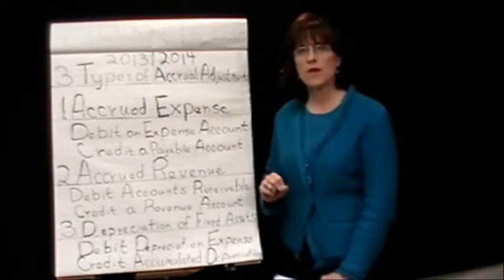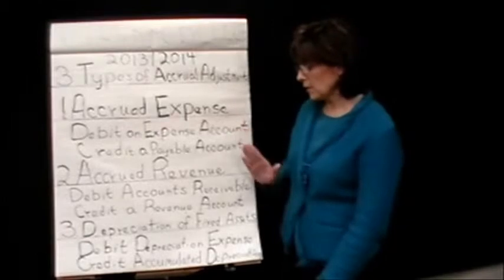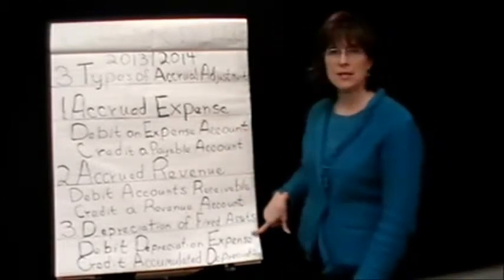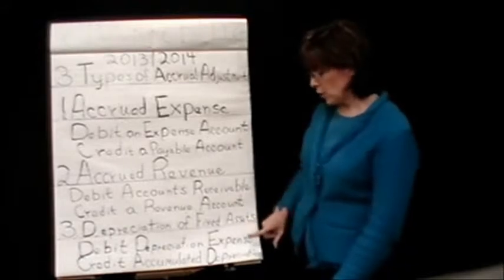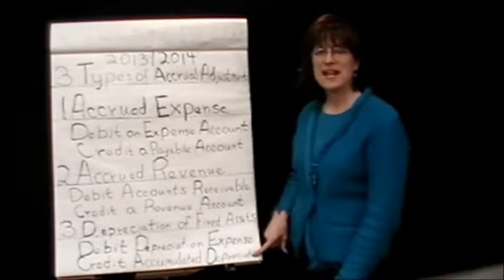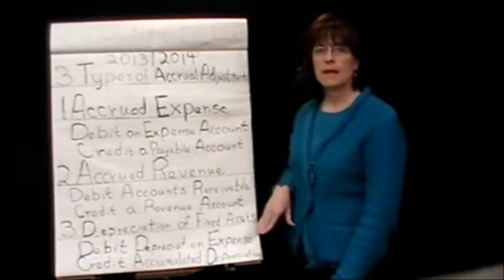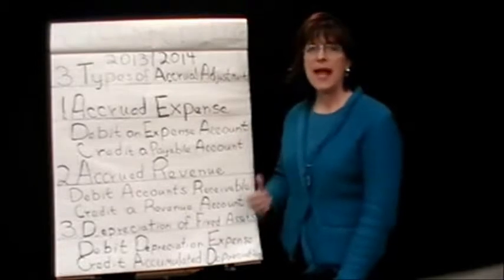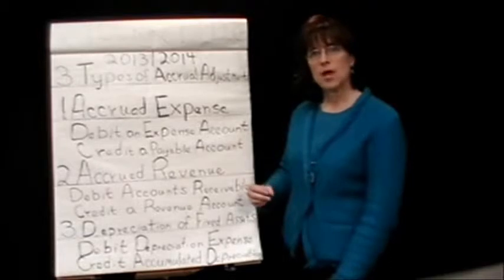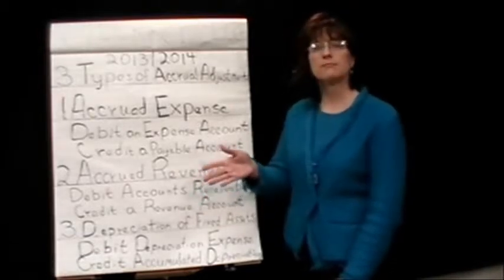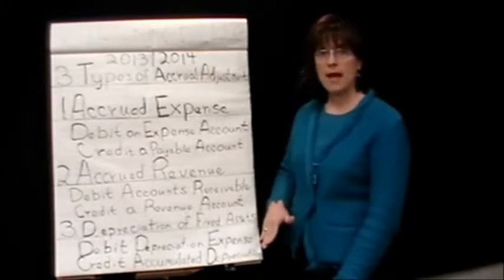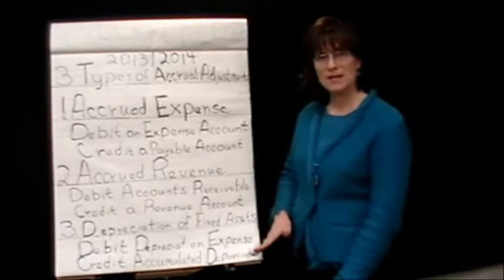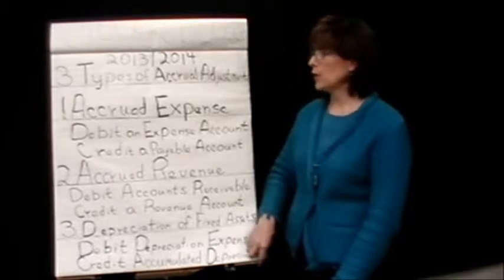Depreciation doesn't necessarily have to do with the market value of the asset. When we record depreciation, we will be debiting depreciation expense, which affects our net income for the period — depreciation will reduce our net income. We'll be crediting accumulated depreciation, which is a brand new type of account called a contra-asset account. A contra-asset account has the opposite balance of an asset and is an offset. Accumulated depreciation is taken against a particular fixed asset — equipment, building, furniture — and offsets its balance. Because it is a contra-asset, we credit accumulated depreciation when we record depreciation.